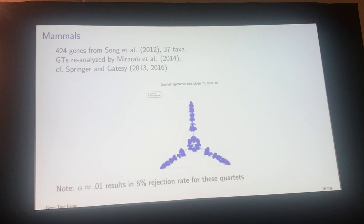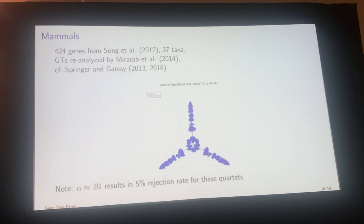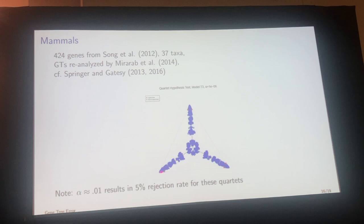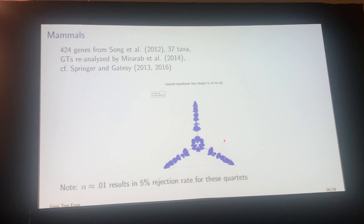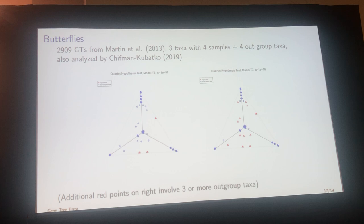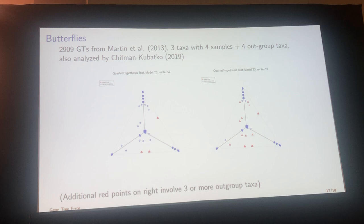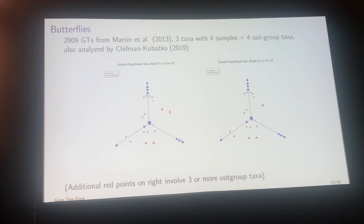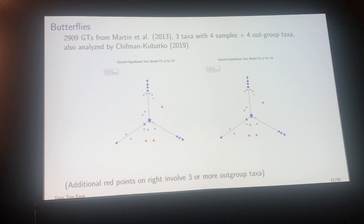Next is the mammal data set from Song et al., reanalyzed in Europe — very controversial if you read the papers by Springer and Gatesy. Springer and Gatesy argued everything here was gene tree inference error; I find that a little hard to believe given this figure. It looks to me like the coalescent is a simpler hypothesis. Then there's a butterfly data set arguing for hybridization — depending on the test level, there are many points along the lines, others far away, and some flagged specifically as indicating hybridization.